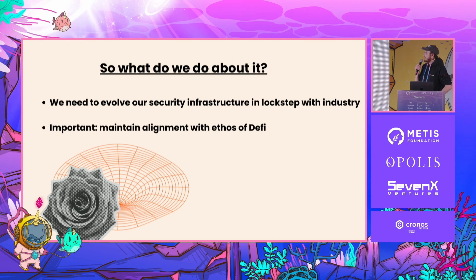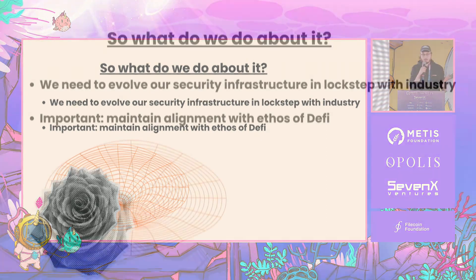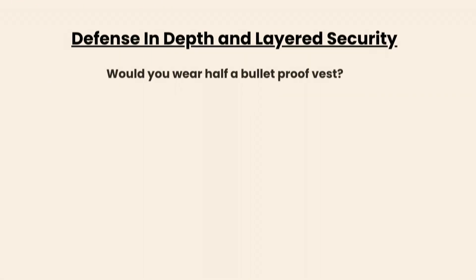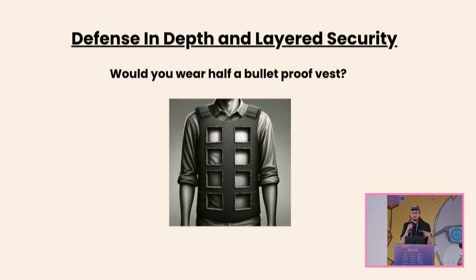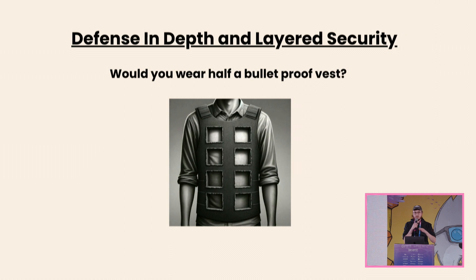There's a really big piece to this infrastructure that hasn't been tackled quite yet, across audits, bug bounties, and alerting infrastructure. The first thing to think about is layered security. If you're a protocol and you're using audits, bug bounties, and alerting platforms, you're doing layered security — adding many different layers to fill the holes in this bulletproof vest. Security is an iterative process. You're never going to have a silver bullet solution that protects you from every last thing. You need multiple defenses, defenses in depth.